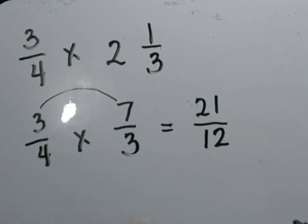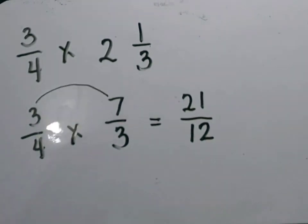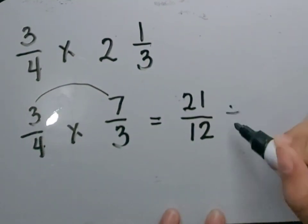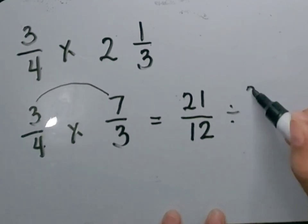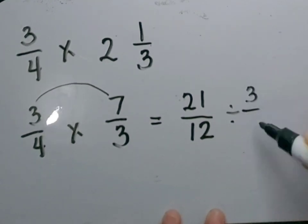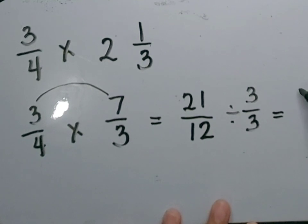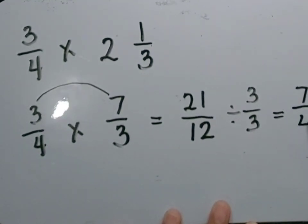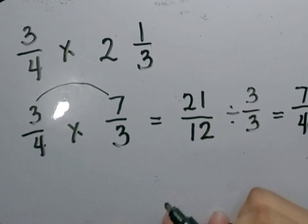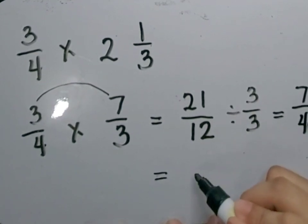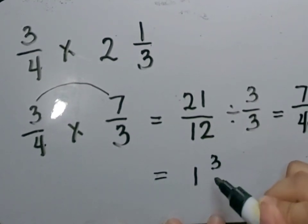4 times 3 is equal to 12. Then let's express our answer in simplest form. The GCF of 21 and 12 is 3. So let's divide 21 and 12 by 3. 21 divided by 3 is equal to 7. 12 divided by 3 is equal to 4. Our answer will be 1 and 3 fourths.